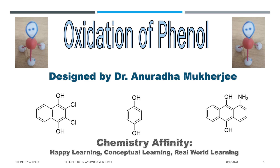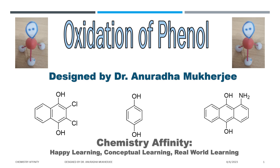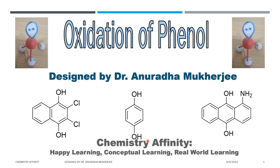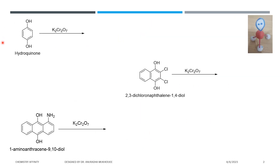Hello everyone. In this video I am going to discuss the oxidation of phenolic OH of these three types of molecules. This is hydroquinone, which contains phenolic OH at the 1 and 4 positions. In presence of K₂Cr₂O₇ it oxidizes and we get benzoquinone.